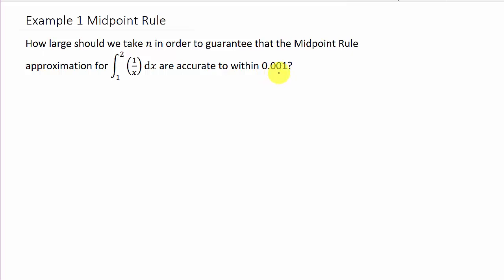Alright, so we've got to find k. So, let's write down, we've got absolute value e sub m is less than or equal to k times b minus a cubed over 24n squared. And we've got to figure out what k is. Okay, see we know a and b, that's the limits on the integral. And then we're actually solving for n. And we need to know what does n need to be in order for this to be less than or equal to 0.001.